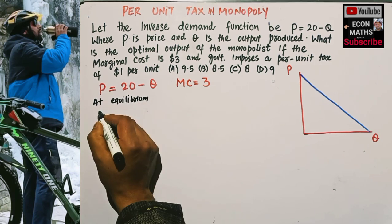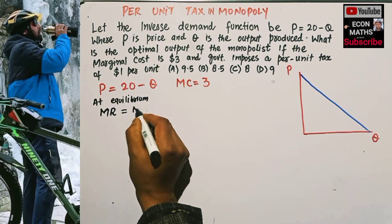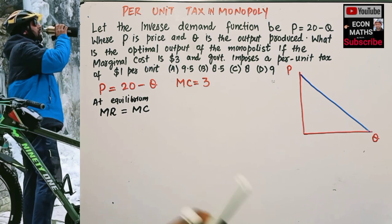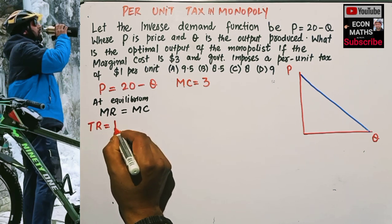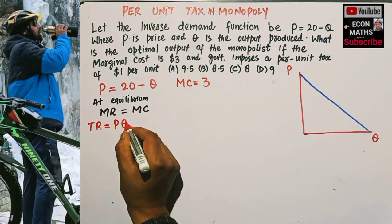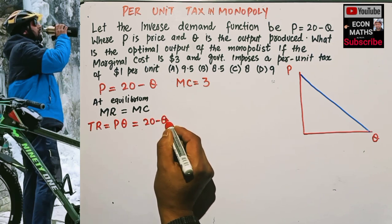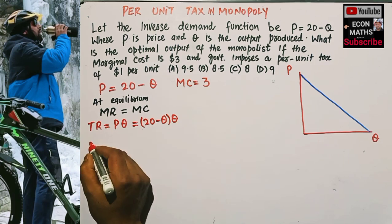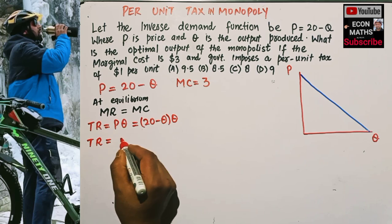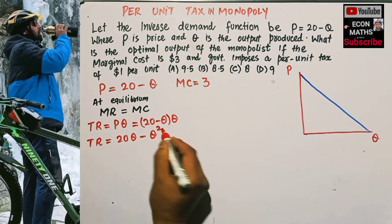At equilibrium, a monopolist will produce where marginal revenue equals marginal cost. To find the marginal revenue, we first need to find the total revenue. Total revenue is simply price times output. The price function is 20 minus q, and we multiply this by q. That gives us total revenue = 20q minus q squared.